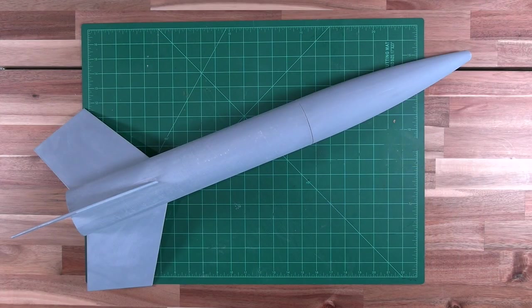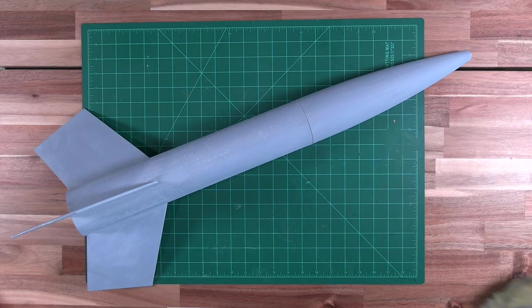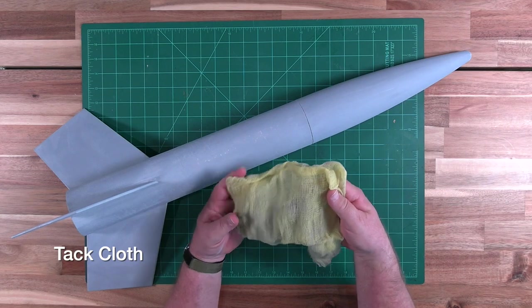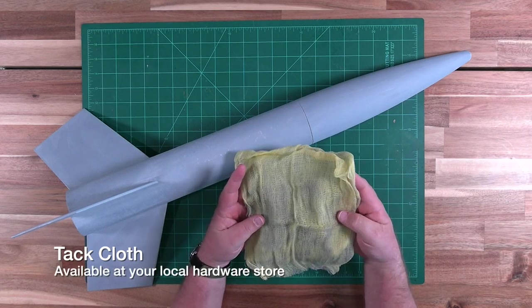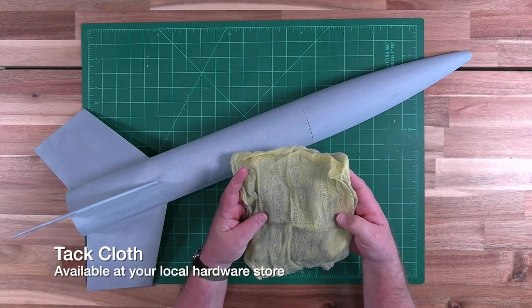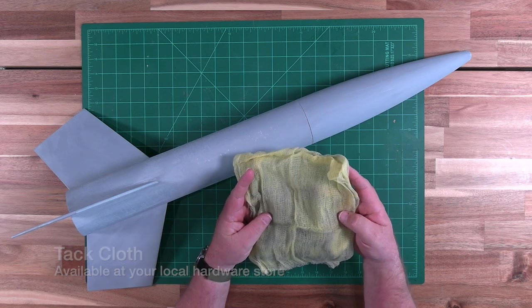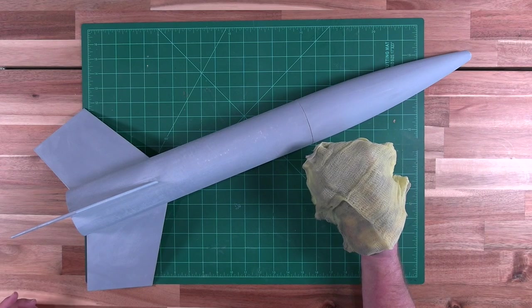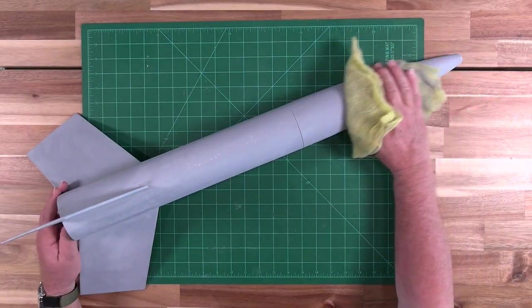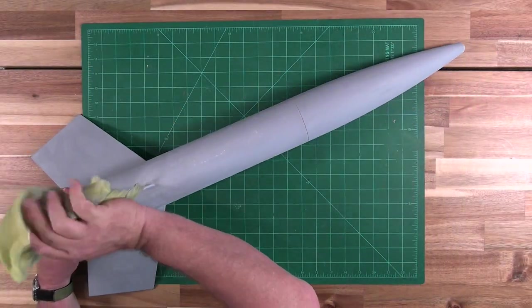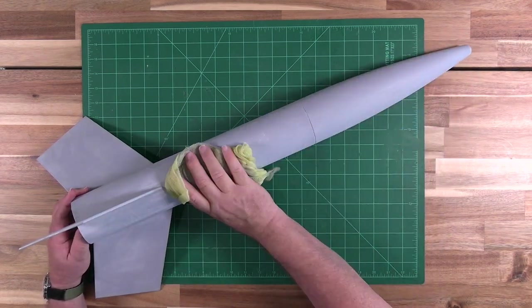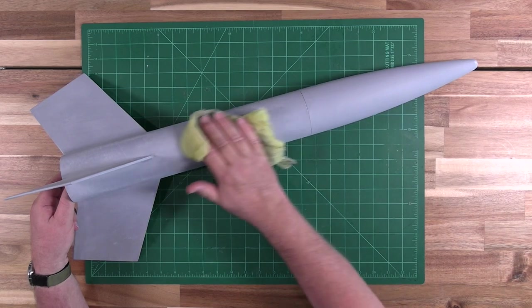We finished sanding the primed airframe, and our next step will be to use a tack cloth. A tack cloth is a wax impregnated bit of cheesecloth that's used to remove any excess dust from the model. You can get these at Home Depot or Lowe's or any other type of home goods store.